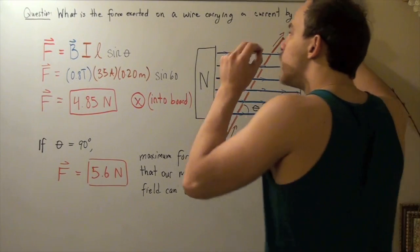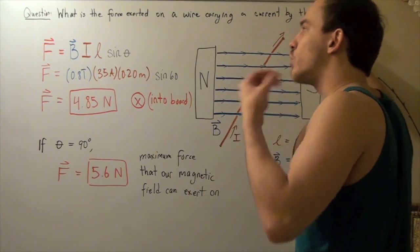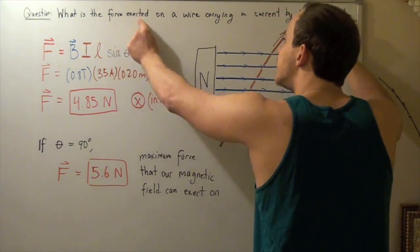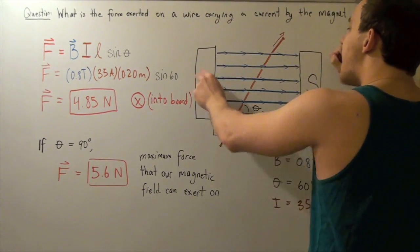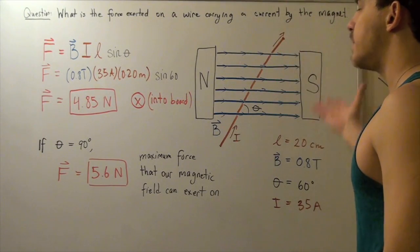Now, we want to find both the magnitude and direction of the force exerted on our wire carrying our current by the magnet, or the magnetic field created by our magnet.